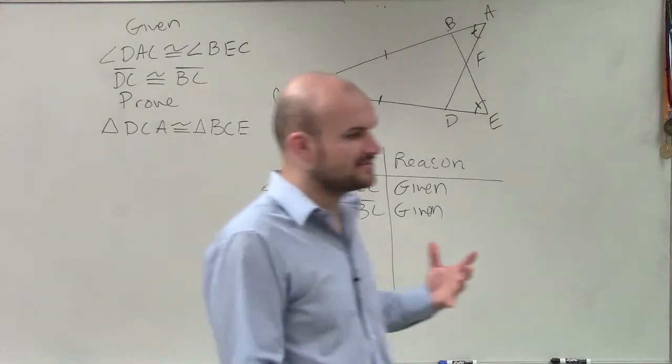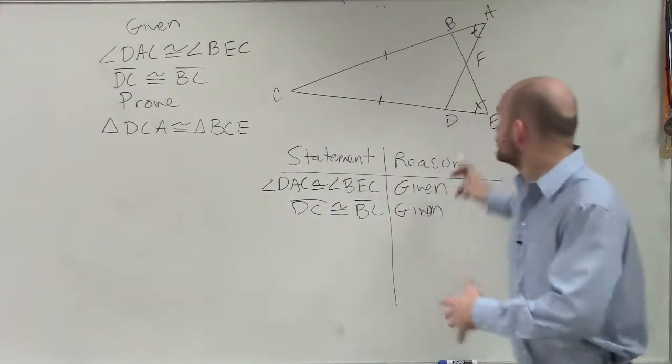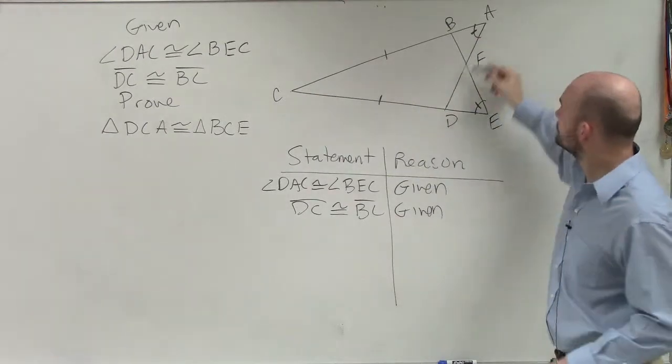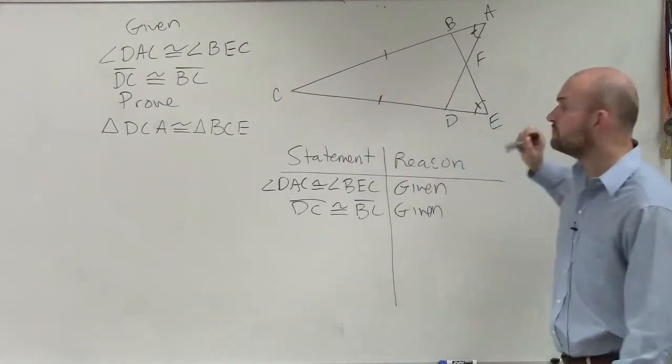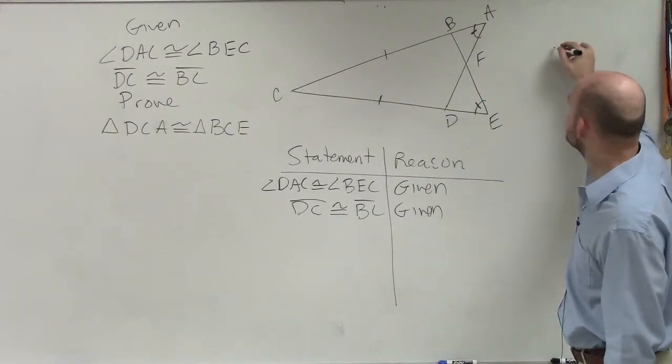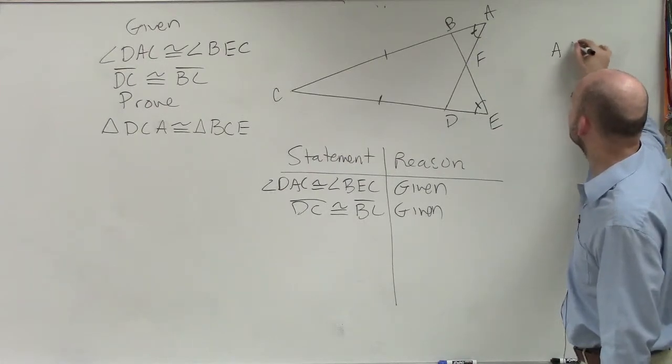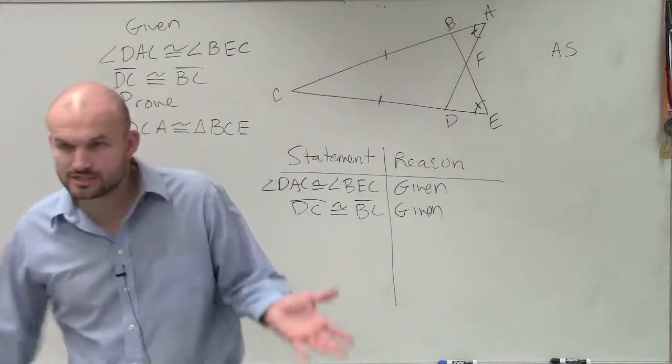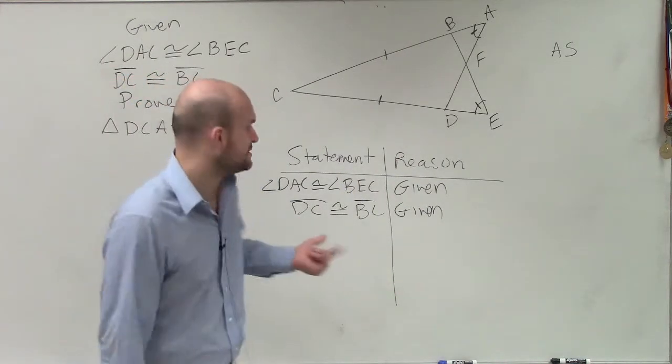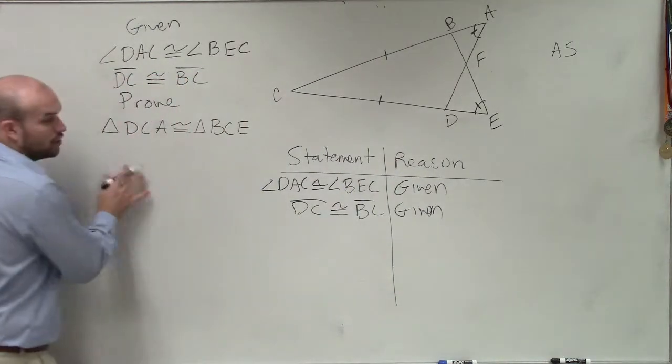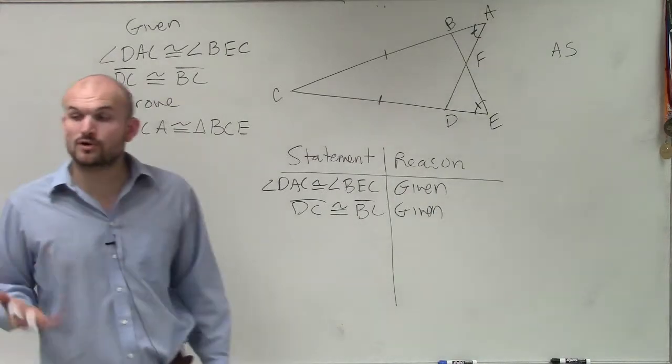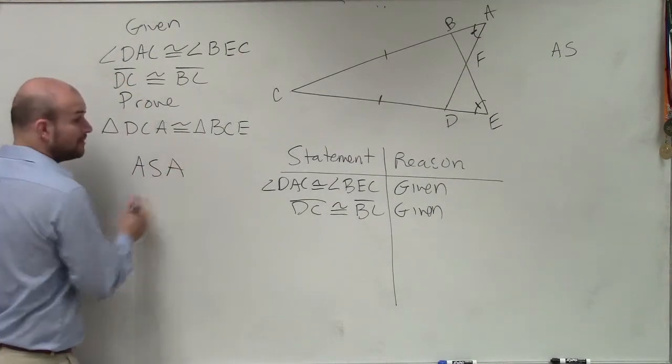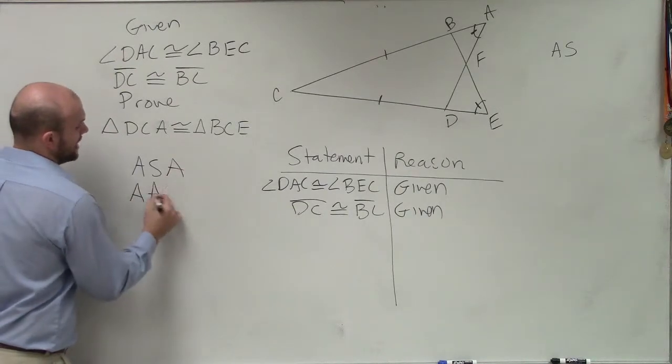And now I know this is kind of hard for you guys sometimes to figure out, but we're trying to determine that this triangle is congruent to this triangle. Now so far, all I have that's congruent is an angle and a side. Now of the congruence that we're going to work on for today, we have angle, side, angle, and angle, angle, side.